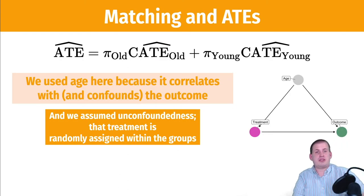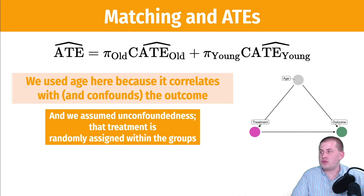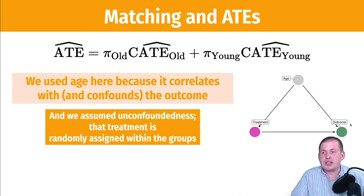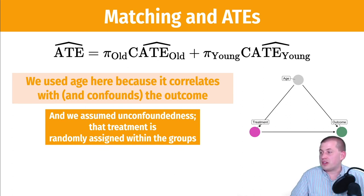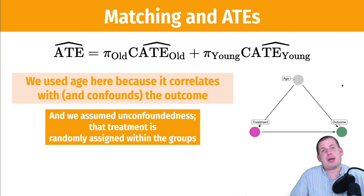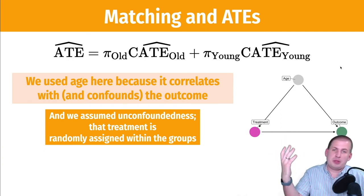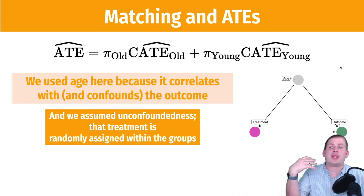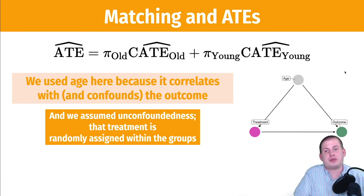Back to our DAG: age causes treatment and outcome. We chose the old/young split because that column was observable and we know it's confounding the relationship — that's one way of statistically taking care of it. This also only works if we assume unconfoundedness: that treatment within the age groups is random. The one old person who didn't do the program just happened not to; the one young person who did basically happened to do it randomly.